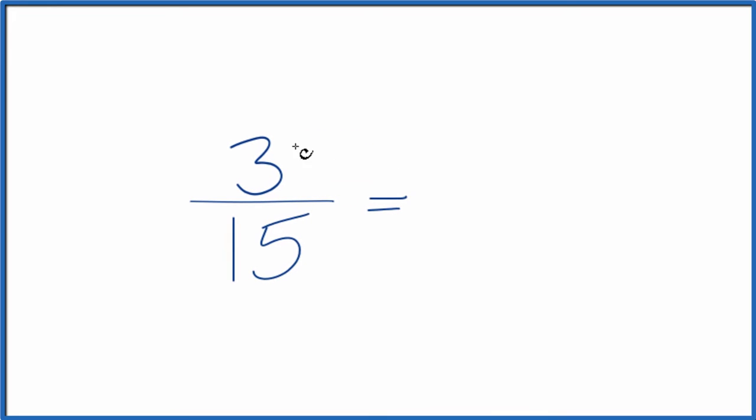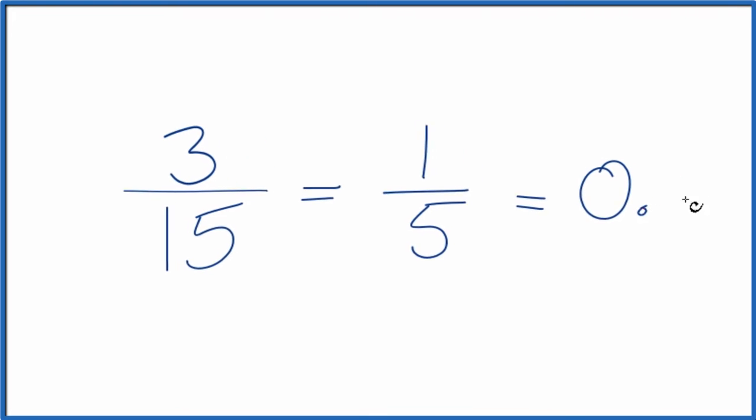In this case, we could simplify 3 fifteenths. 3 goes into 3 one time. 3 goes into 15 five times. So 3 fifteenths, we could simplify this to 1 fifth. These are equivalent fractions. If you divide 3 by 15 or 1 by 5, you get 0.2.